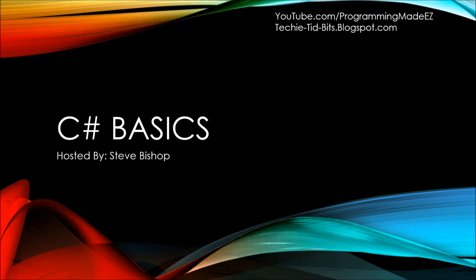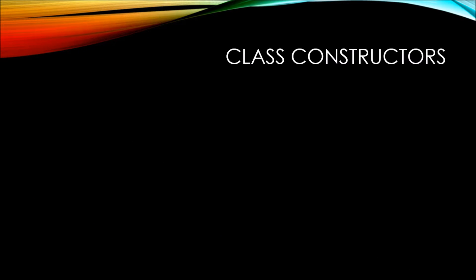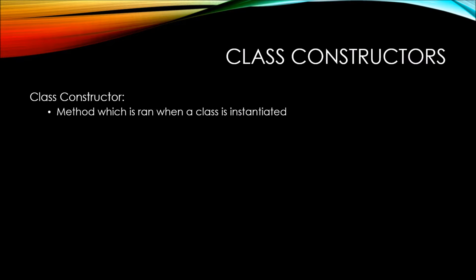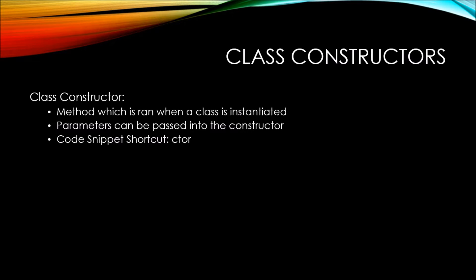In this video on C# Basics, let's take a look at class constructors. Class constructors are methods which are run when a class is instantiated. A class is instantiated when the new keyword is used and a class is assigned to an object. Parameters can be passed into the constructor when the new keyword is used and the class is instantiated. The code snippet shortcut for a class constructor is 'ctor' and we will use that extensively throughout this demonstration.